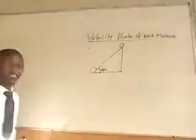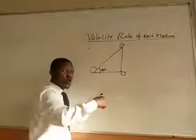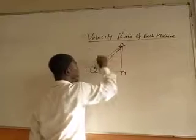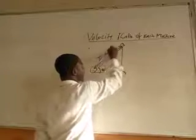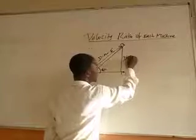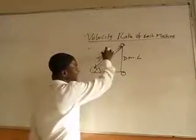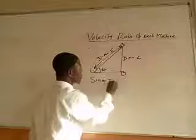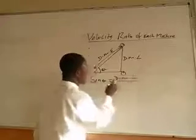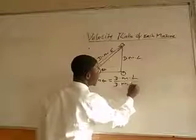The load will move from the bottom to the top — that vertical height is the distance moved by the load. But you use your effort to push it along the slope, so the slope serves as the distance moved by the effort. Looking at sin θ, sin θ equals opposite over hypotenuse — that is, the distance moved by the load over the distance moved by the effort.